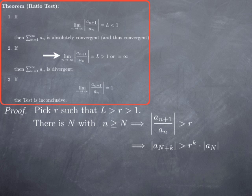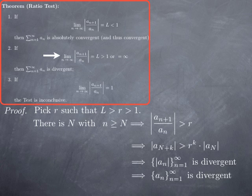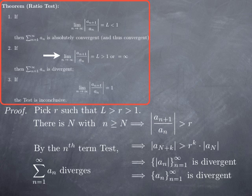Since r is greater than 1, r^k goes to infinity. Therefore |a_{N+k}| goes to infinity as well. This means the general term a_n does not approach zero — whether the terms are always large and positive, always large and negative, or alternating between large positive and large negative, they do not approach a fixed value. By the n-th term test, the series is therefore divergent.